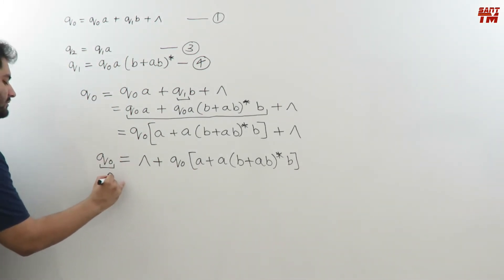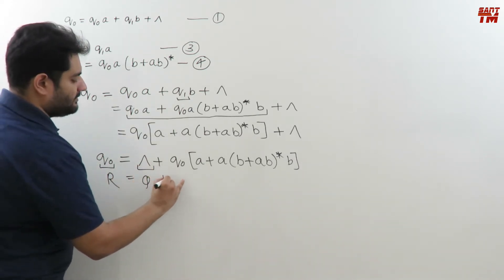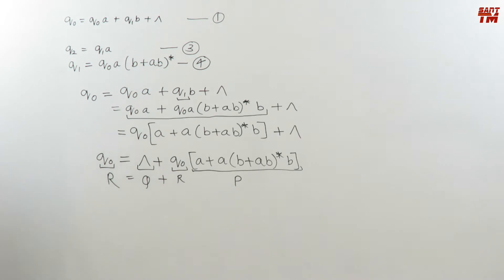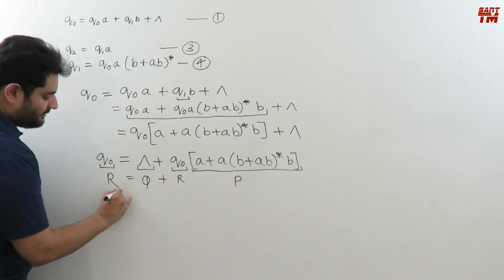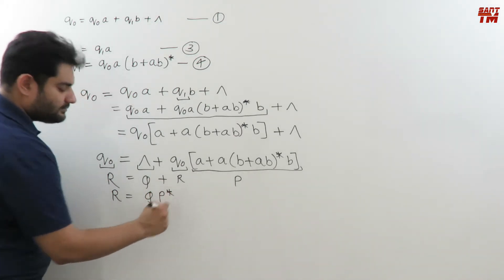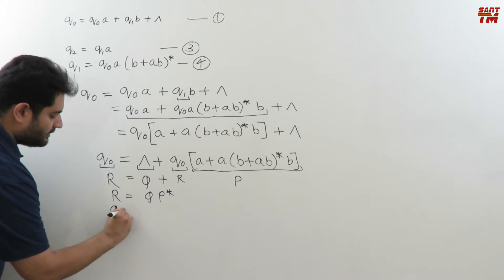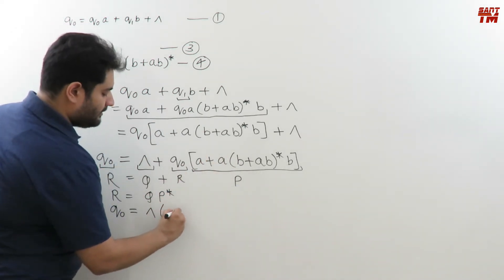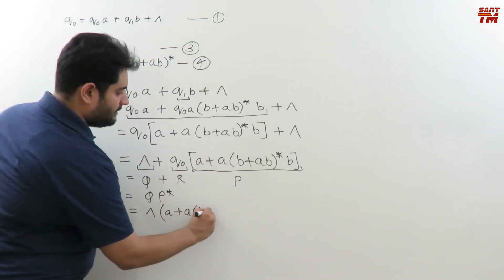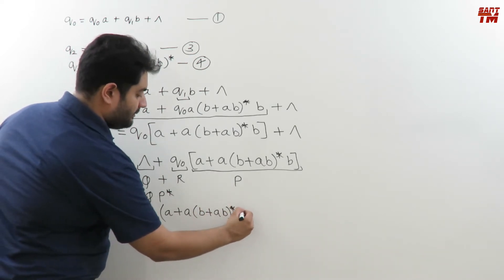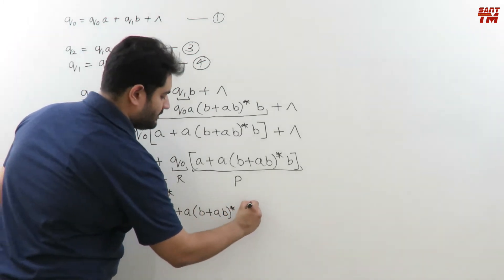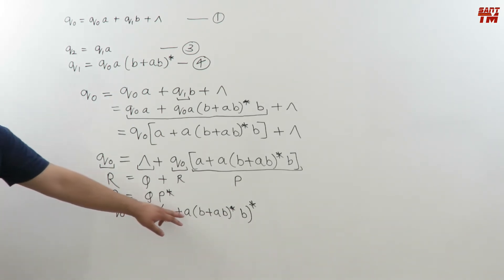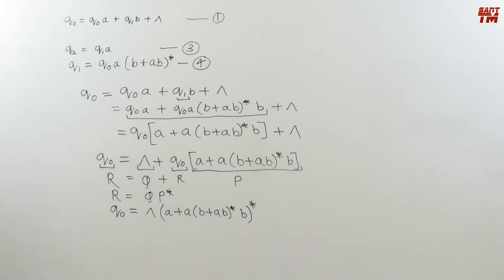Applying Arden's theorem again: r = Q + r·P simplifies to r = Q·P*. Here r = q0, Q = null, and P = (a + a·b + a·b*·b). So q0 = null · (a + a·b + a·b*·b)*. Label this as the equation for q0.